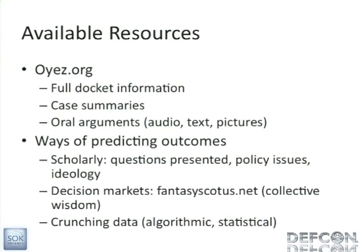We already have several ways of predicting case outcomes. One is the scholarly way: we study the questions that the court is being asked to answer, we research the policy issues that underlie those questions, we understand the ideologies of the justices who will be voting, and we make a prediction based on that. This is what Dahlia Lithwick or whoever's on NPR these days is doing. Next, there's this really funny thing called Fantasy SCOTUS, which is sort of like fantasy baseball, trying to harness the collective wisdom of legal pundits. You can enter and bet on outcomes, and it turns out that Fantasy SCOTUS is not a bad predictor. And then there are some people who have tried to do algorithmic analyses and make complex systems for predicting case outcomes.